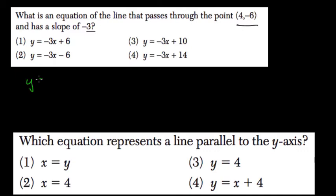In the first one, y equals -3 times 4 plus 6. -3 times 4 is -12, plus 6 is -6. So actually we found it on the first shot.